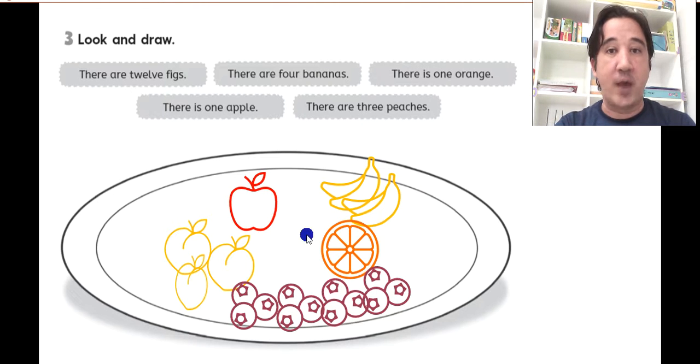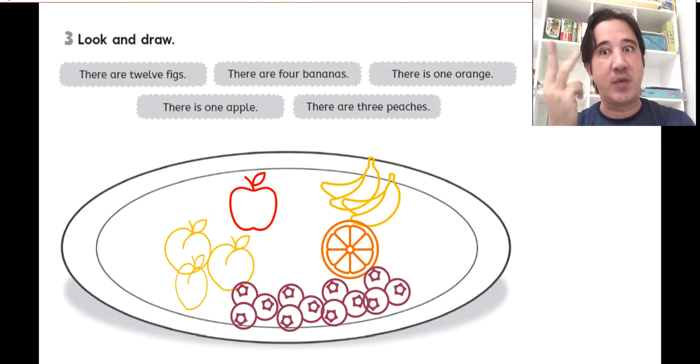So there are 12 figs. Look, there are is with 2, 3, 4. There are 4 bananas. So look. 1, 2, 3, 4 bananas. There are is with 2, 3, 4.